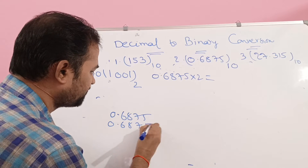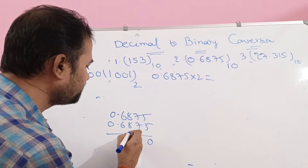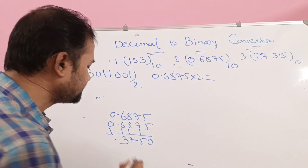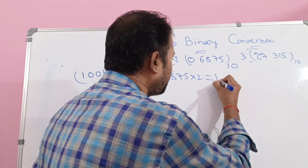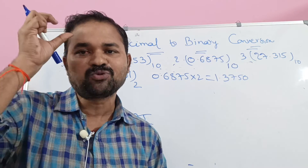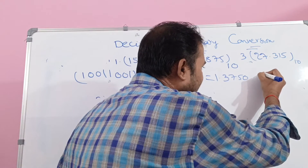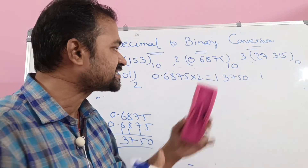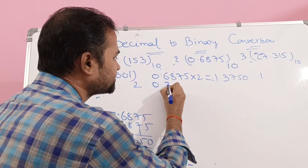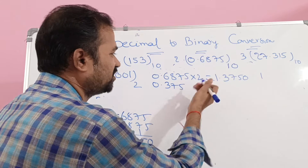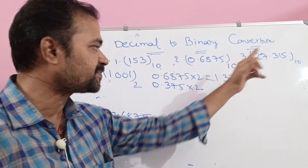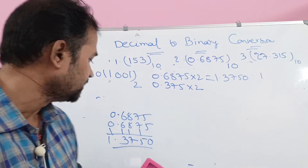The result is 1.3750. The integer part is 1, so we extract the integer part and write it down. After extracting 1, the fractional part becomes 0.3750. Next, multiply 0.3750 by 2: the result is 0.75. The integer part here is 0, so we write 0 and there is no change to the fractional value. So we continue with 0.75.